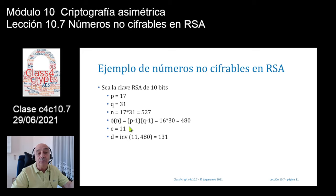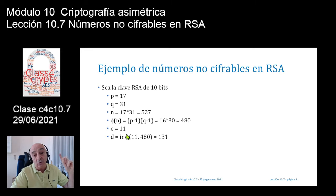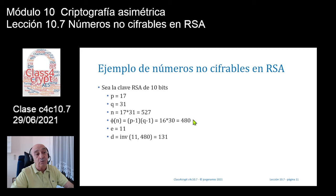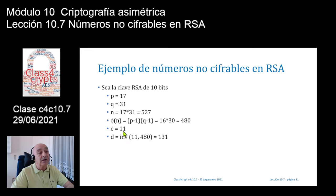Elijo una clave pública, un número impar, que cumpla con la condición de que tenga inverso, es decir, que el máximo común denominador entre E y fi de N sea igual a 1. Elijo el 11, que no tiene factores en común con 480, lo cual asegura que haya un inverso. El inverso, conocido como clave privada, calculado con el algoritmo extendido de Euclides del inverso de 11 en 480, es igual a 131.